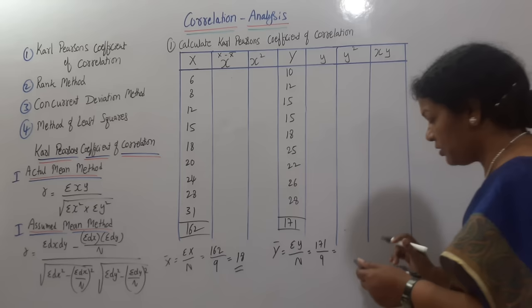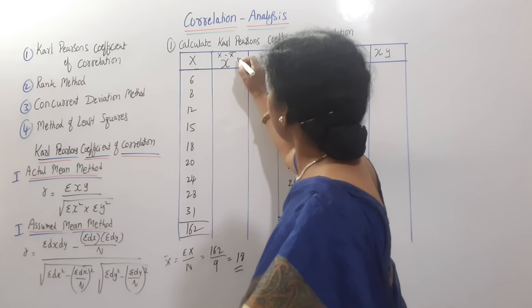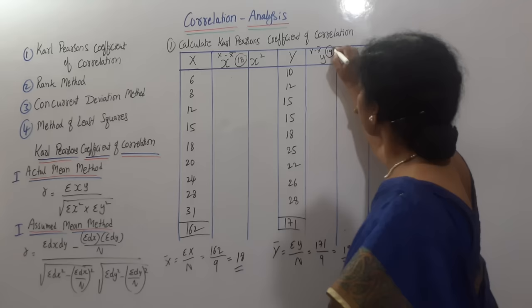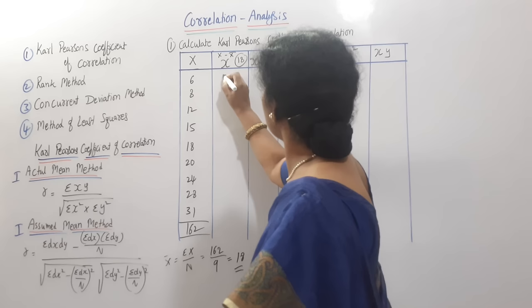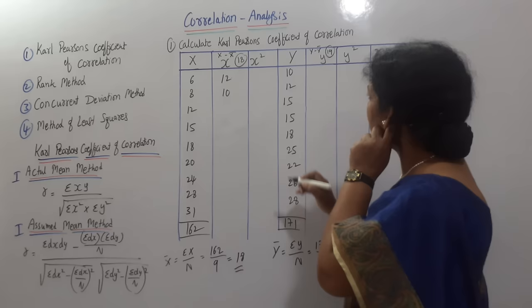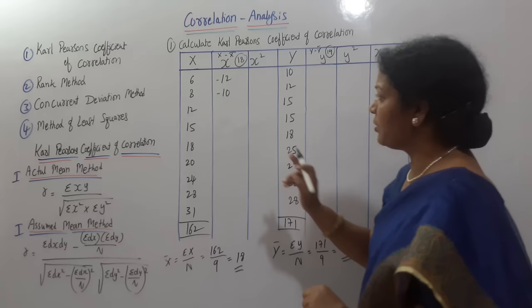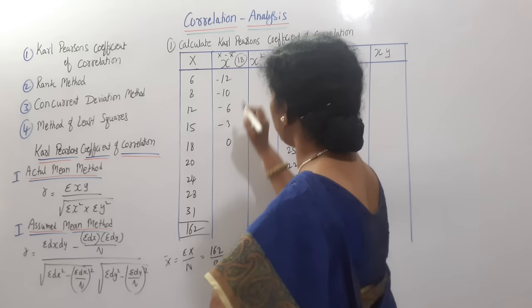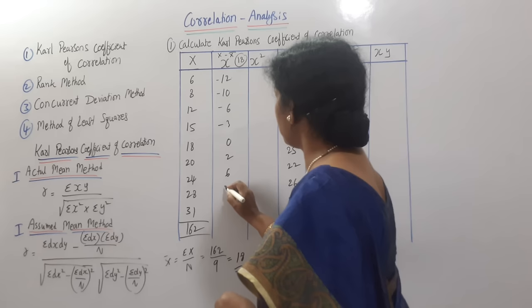So x̄ is 18 and y̅ is 19. Now computing small x as x minus 18: 6 minus 18 = −12, 8 minus 18 = −10, 12 minus 18 = −6, 15 minus 18 = −3, 18 minus 18 = 0, 20 minus 18 = 2, 24 minus 18 = 6, 28 minus 18 = 10, 31 minus 18 = 13.